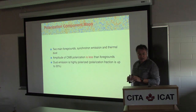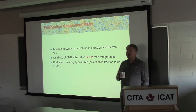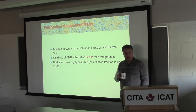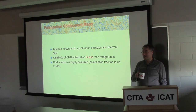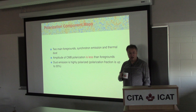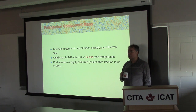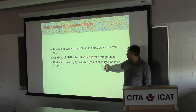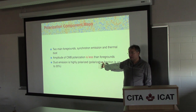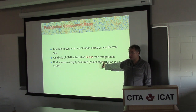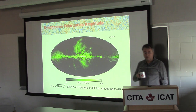Let's get back to the polarization story. There are two main foreground components: synchrotron and dust. The amplitude of CMB polarization even in E mode is comparable to or less than these foregrounds, so you have to do component separation. A big surprise from Planck is that dust emission is highly polarized - more highly polarized than people thought. So basically these are your enemies, and you better know them if you want to fight them.